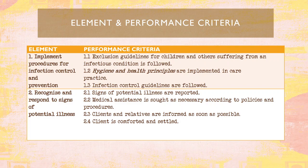Let's discuss the element and performance criteria. Number 1: implementation of procedures for infection control and prevention. Inclusion guidelines for children and others suffering from an infectious condition are followed. Hygiene and health principles are implemented in care practice. Infection control guidelines are followed. It is very important that we have infection control and prevention in order to minimize the risk of different diseases or infections to our clients.